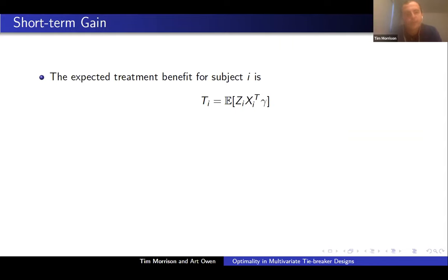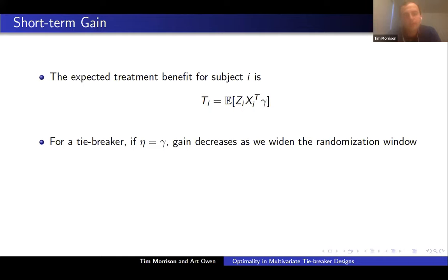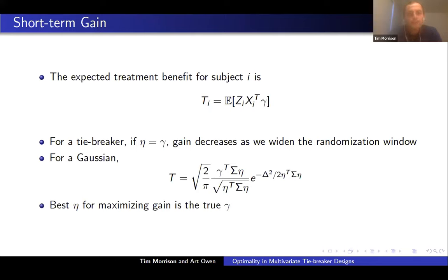The other end of the trade-off is short-term gain, which is the expected value of z sub i times x sub i transpose gamma — the expected treatment benefit. For a tiebreaker, things get thorny due to the eta-gamma discrepancy, but if eta equals gamma, gain decreases as we widen the randomization window, and an RDD is optimal. For the Gaussian case, the gain is some constant times a ratio of quadratic forms times a negative exponential. In contrast to efficiency, the best eta for maximizing gain is the true gamma — if we knew the true treatment effect, that would be best for gain, whereas for efficiency, the best choice looks at the distribution the least.